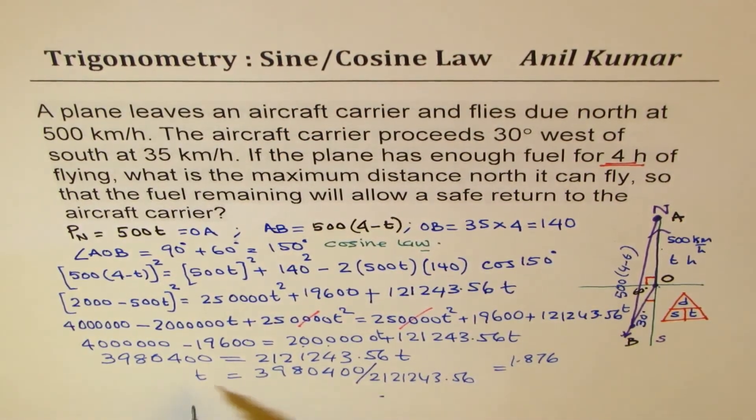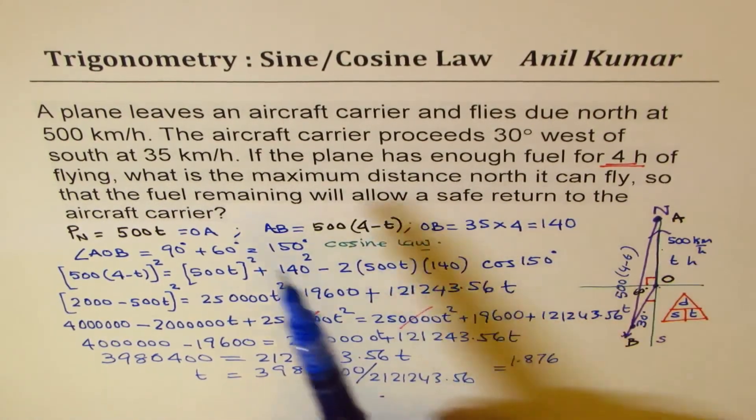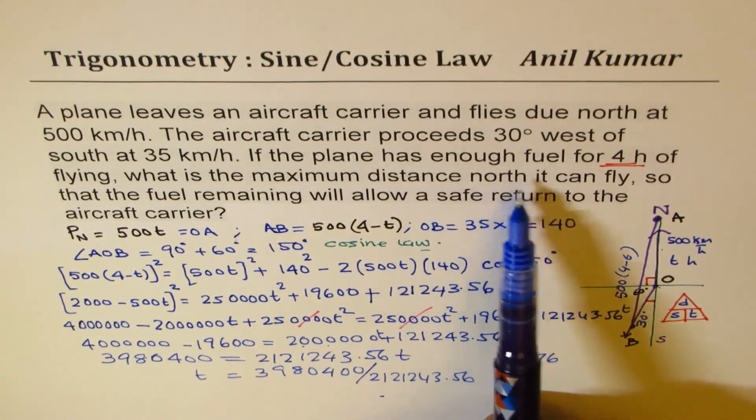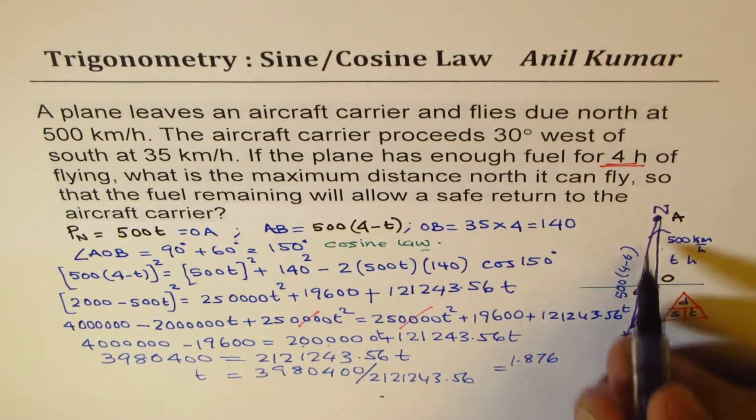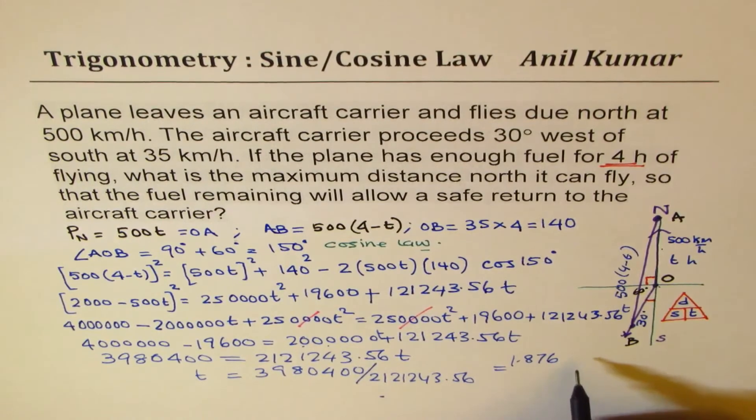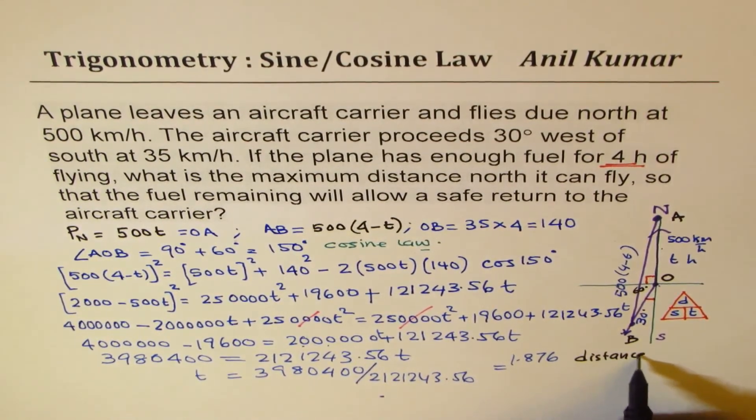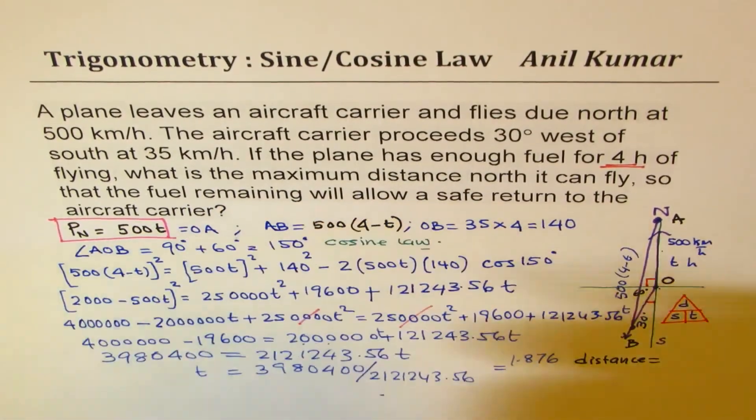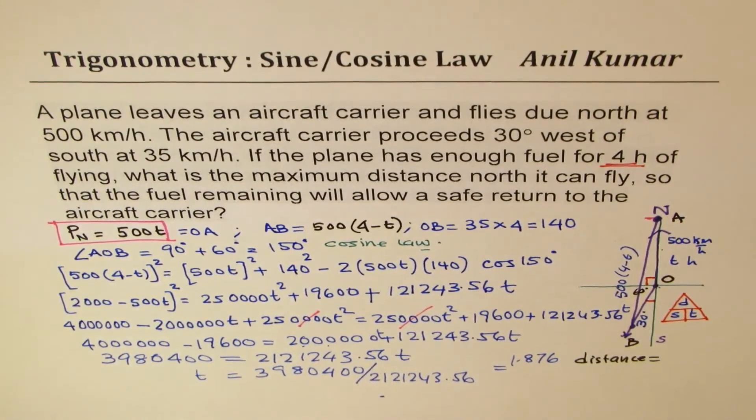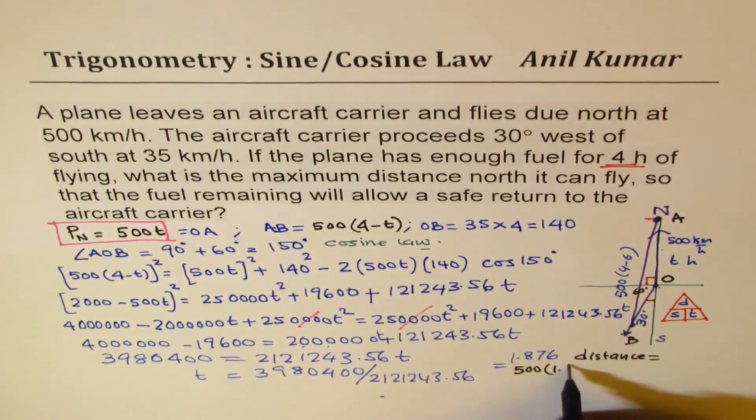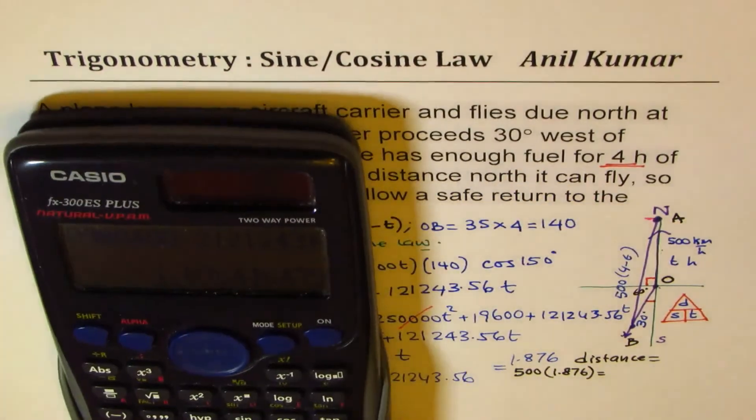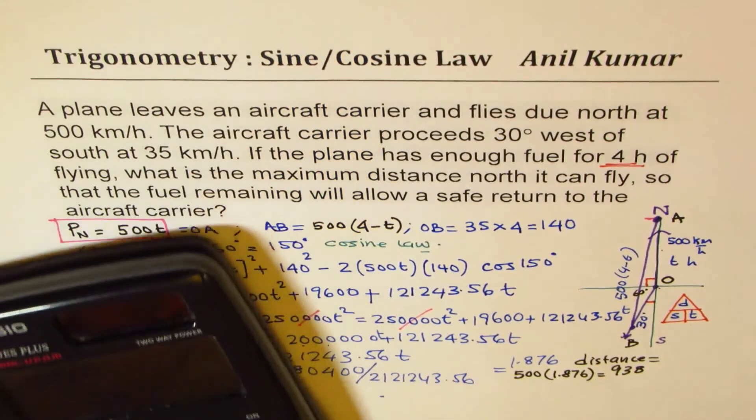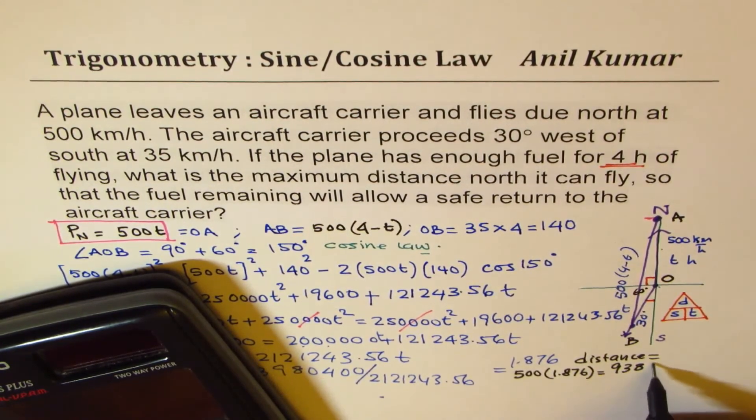So that is the time T in hours. So we want to find, so that the fuel remaining, so what is the maximum distance? We want to find maximum distance north it can fly. So that is the time T. So the distance is 500 times T. So we can now write that the distance will be equals to that into 500. So this is the distance which is our answer. Distance, it is flying north. So that should be 500 times 1.876. So we already have that number times 500 gives us 398.2. Let's round it to the whole numbers. So 398 kilometers.